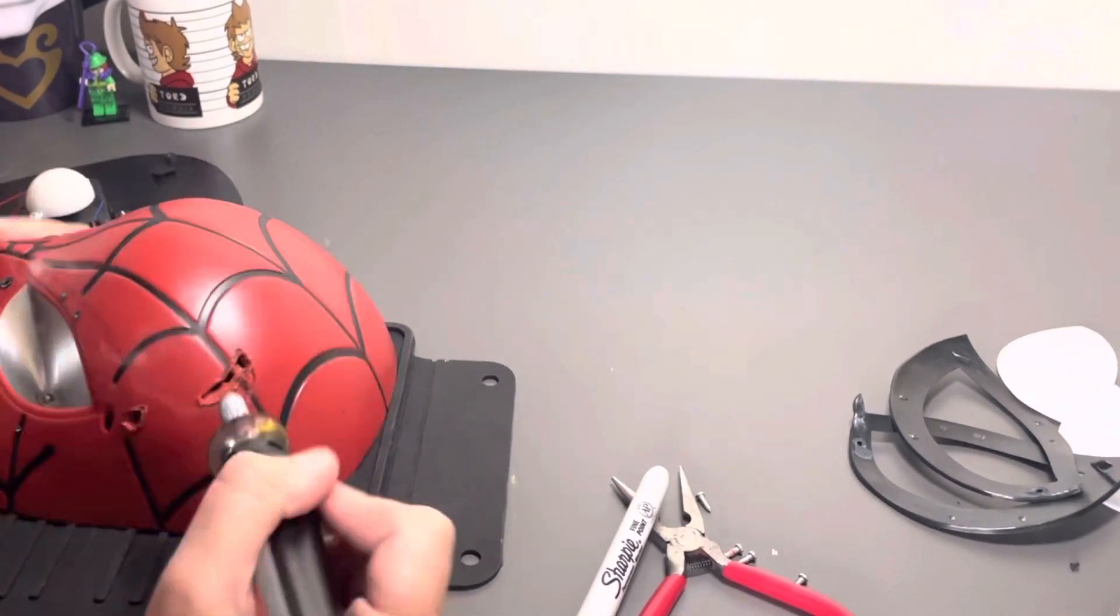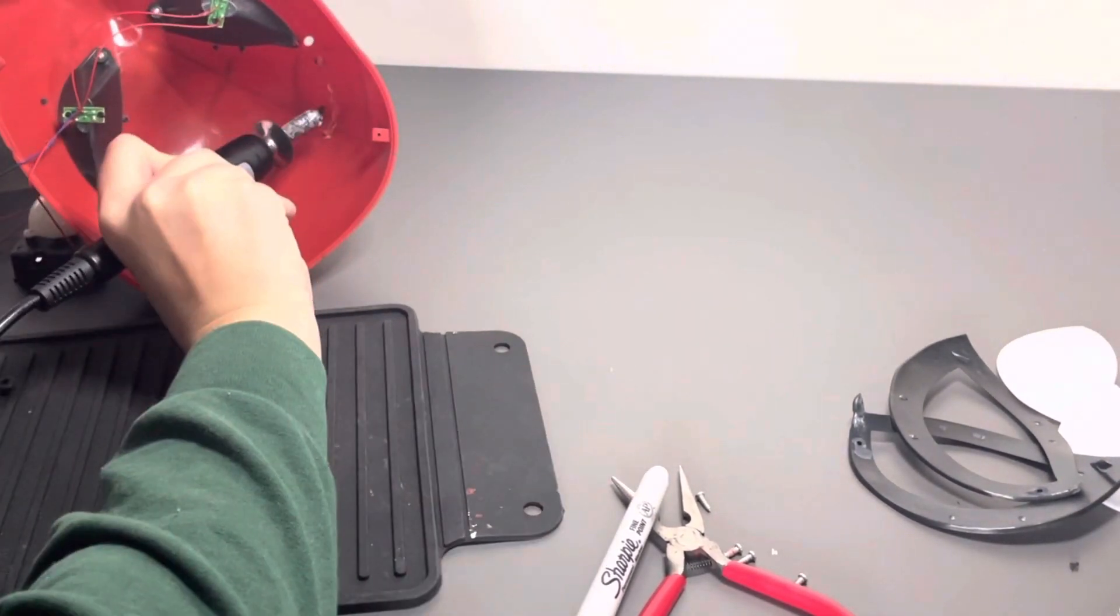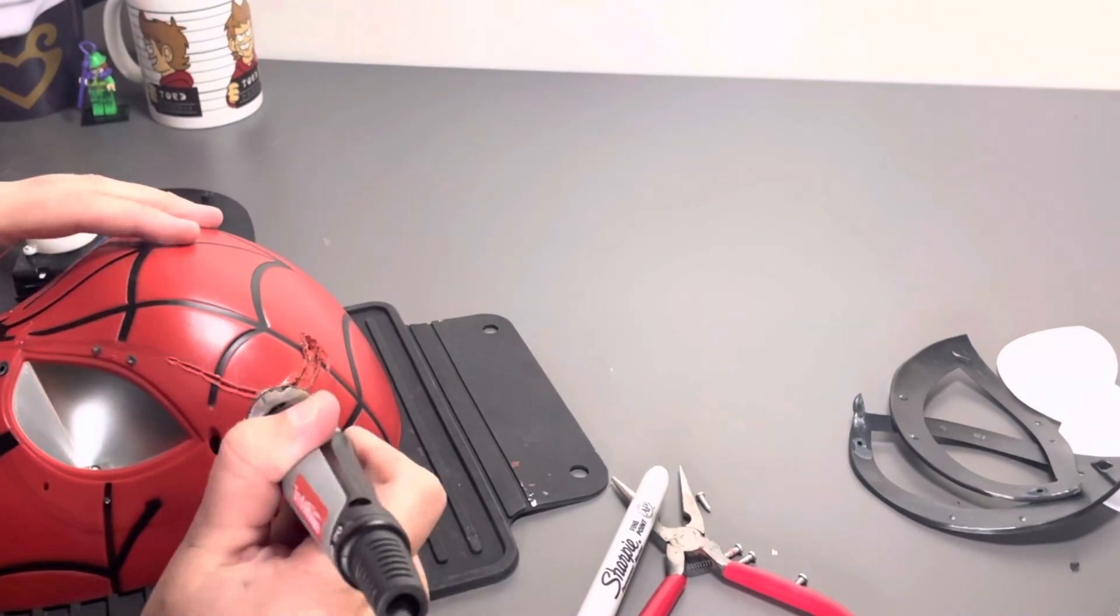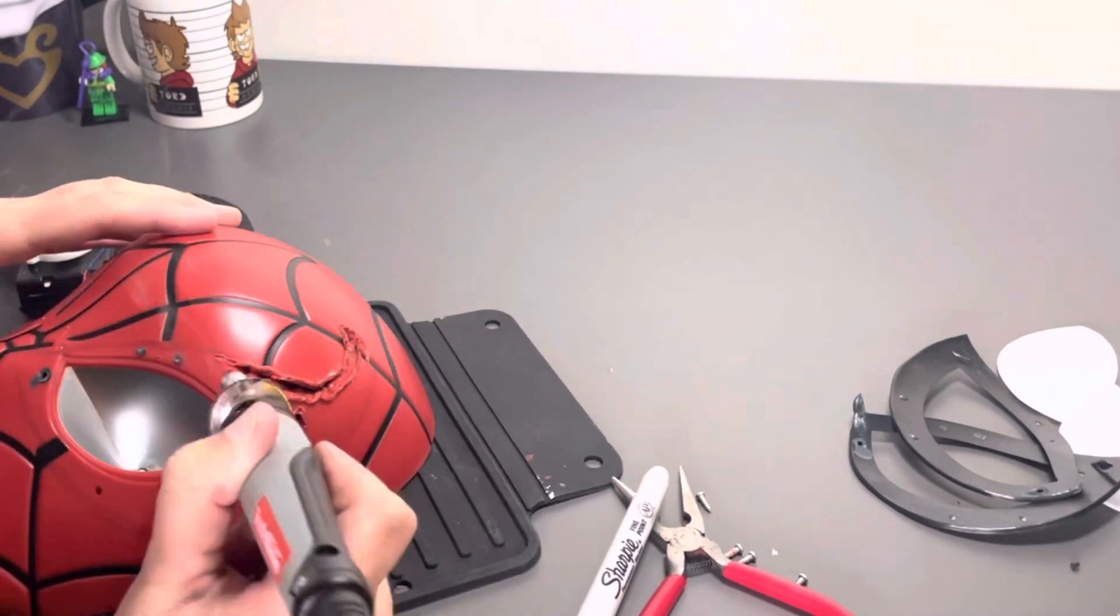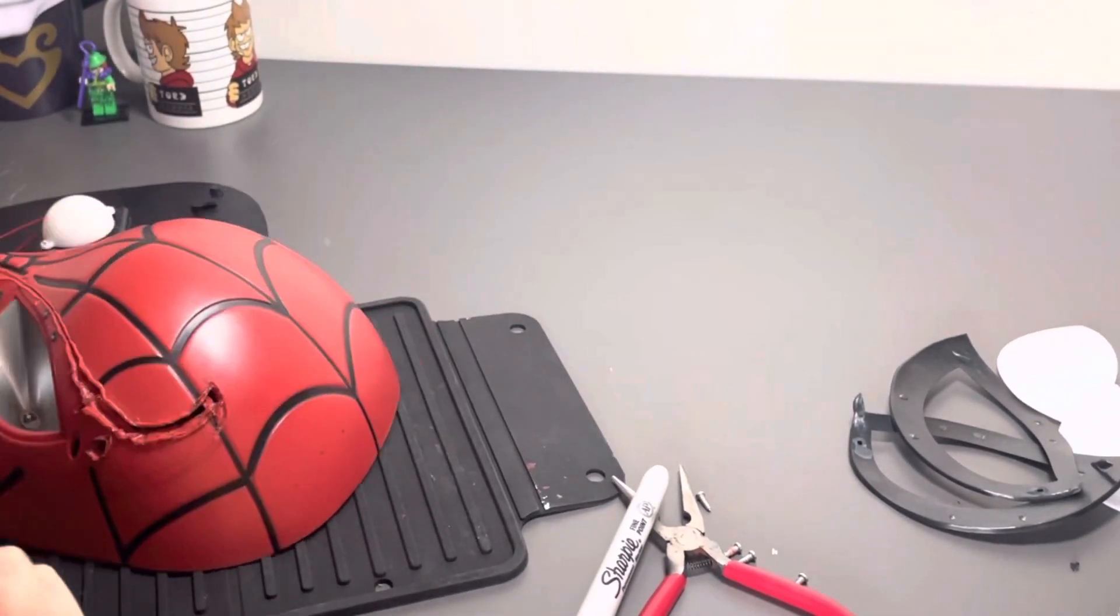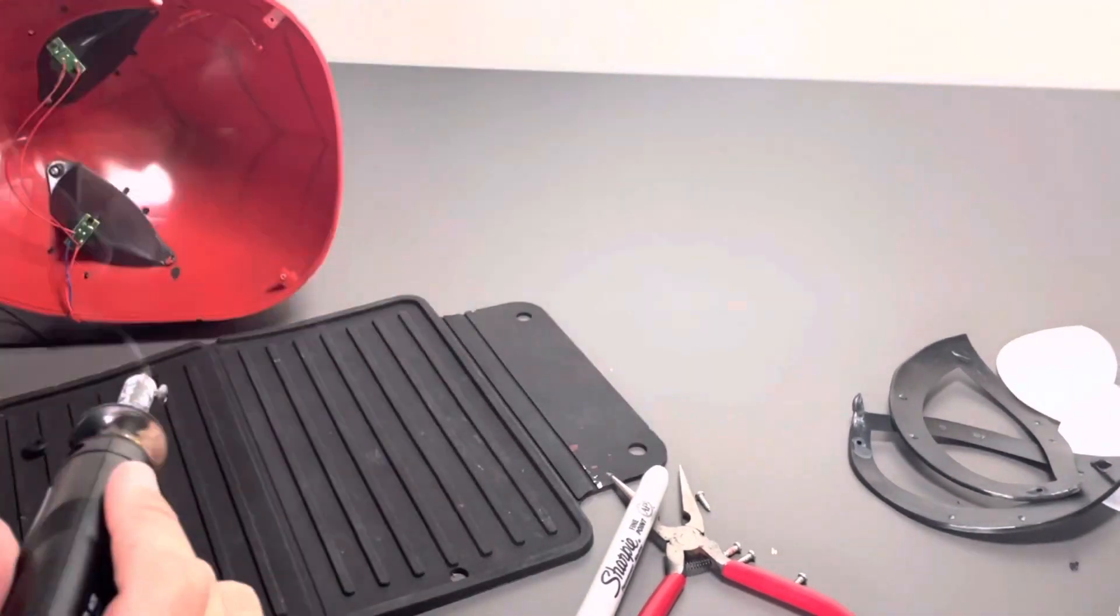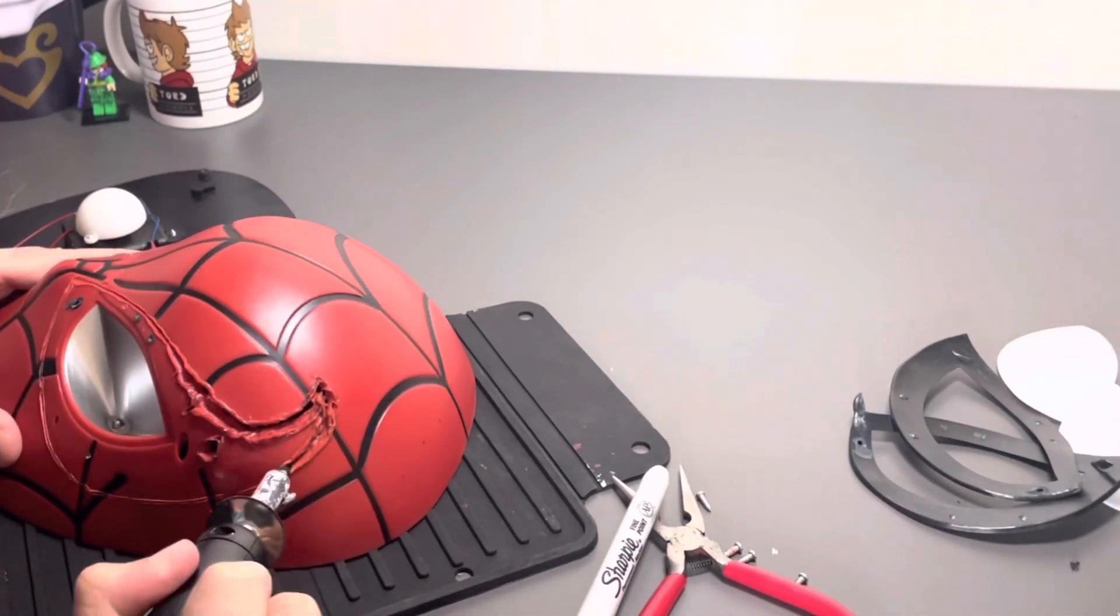I chose to use a hot knife here, which melted the plastic rather than cutting it, but it melted through it. And you get this really gnarly, half-melted look around the edges. Which would be terrible if I was making Spider-Man, but looks great for Venom.